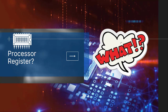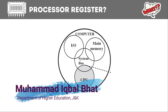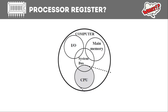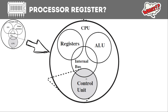Let us begin with our first topic: what are processor registers? A computer system consists of a number of components. We have a central processing unit, CPU, that is responsible for executing different kinds of instructions. Associated with the CPU we have the main memory, RAM, that stores the data and instructions on which the CPU operates. We have input/output devices connected with the system, and all these components are connected through a system bus, the data pathway. If we further zoom into this CPU...